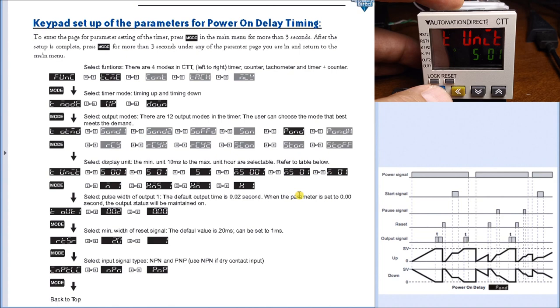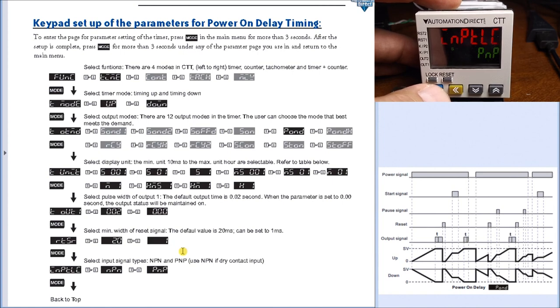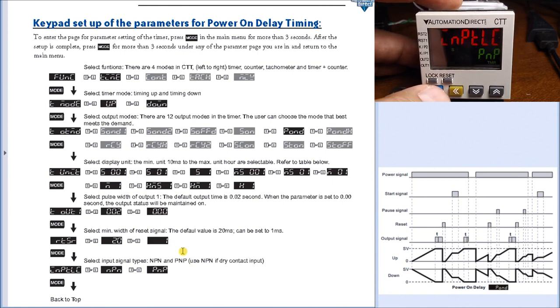Next we have our timing units, in this case here we have 0.1 of a second. Next we have our output, now we set for zero so the outputs will be maintained. Then we have our reset value which is set for 20 milliseconds, and then we have a PMP because we're connected to a voltage input in our particular case here.